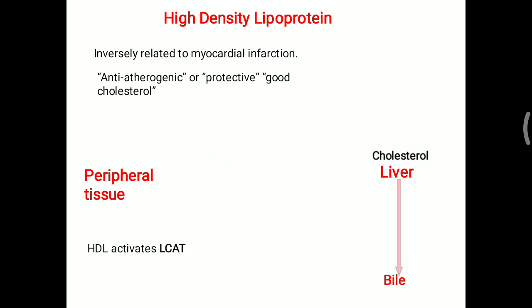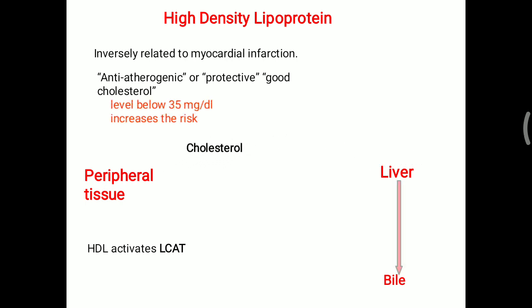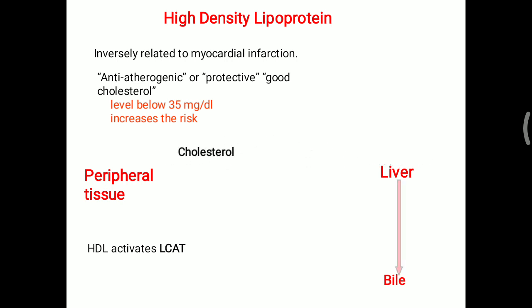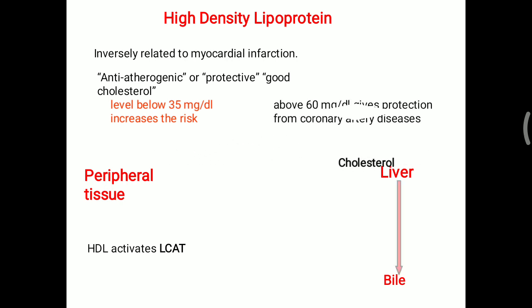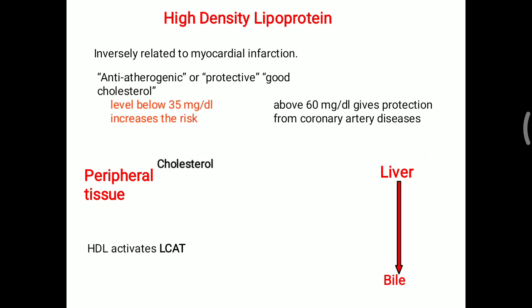When cholesterol is deposited, it can lead to atheromatous plaque or atherosclerosis. An HDL level below 35 mg/dL can increase the risk of atherosclerosis as well as coronary artery disease. Oppositely, if the HDL level is above 60 mg/dL, it gives protection from coronary artery disease. These two values are important to remember.